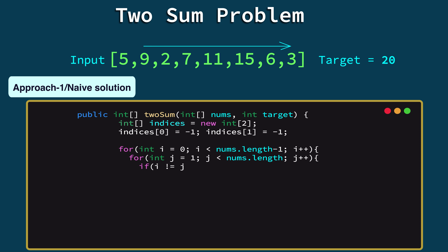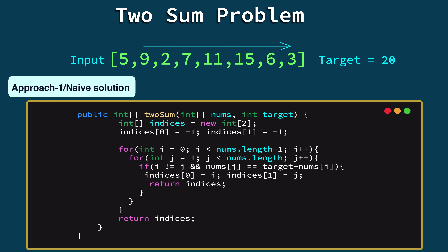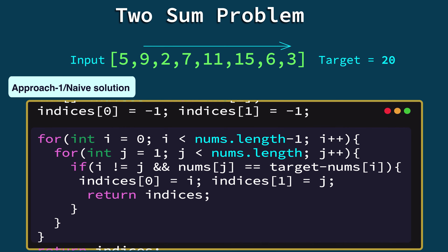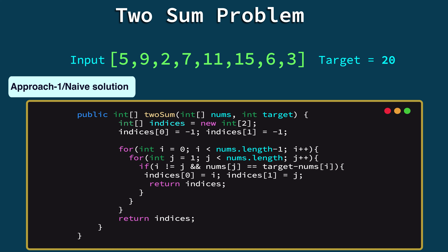In the example, the first element 5 is found by the outer loop and its complement 15 is found by the inner loop, with indices 0 and 5 respectively. In the twoSum method, I declare an array called indices to store the result. The outer loop iterates each element and the inner loop finds the complement. Inside, we check that i is not equal to j (to avoid using the same element), and then check if the j-th element equals the complement of the current element. If both conditions are satisfied, we return the result.